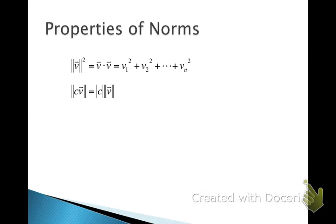Some basic properties of norms include: the norm of a vector squared equals the inner product of the vector with itself — this is just the length without the square root sign. And if we have a constant c times the vector v and take the norm, we can take the constant outside as the absolute value of c multiplied by the norm of the vector.